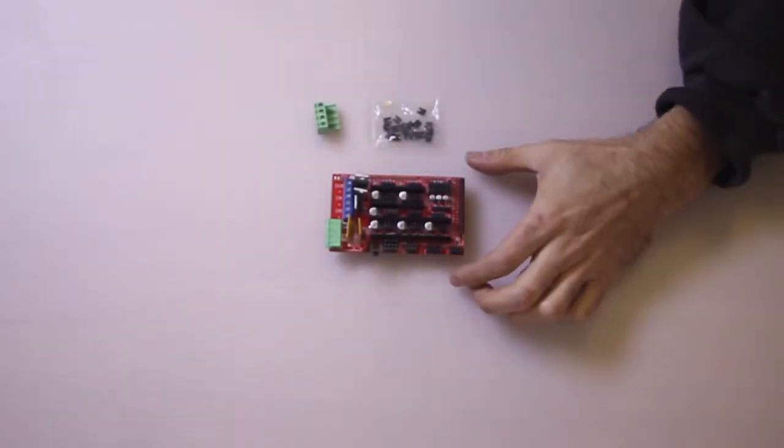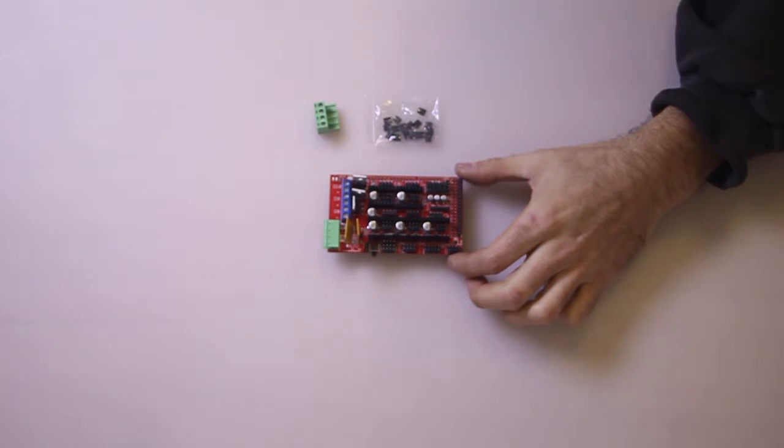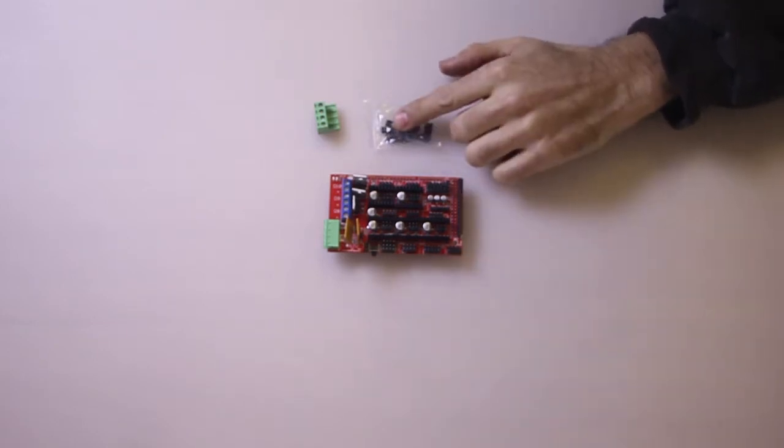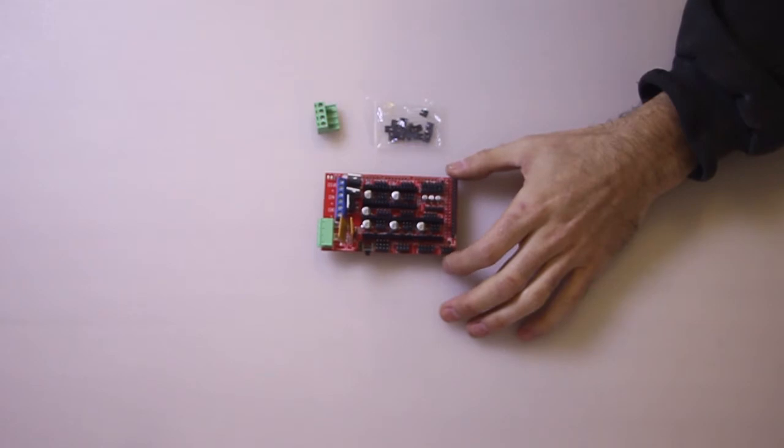We're going to prepare this RAMPS 1.4 board. So what we're going to do is put the jumpers on it and then we're going to insert it into the Mega 2560 on the printer.